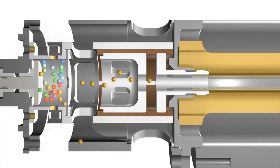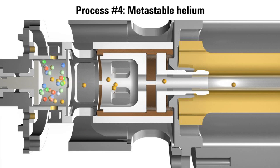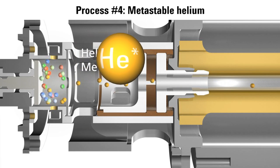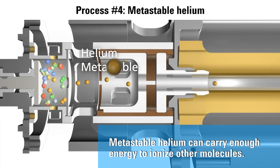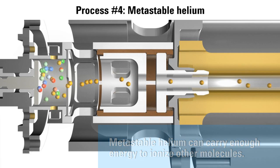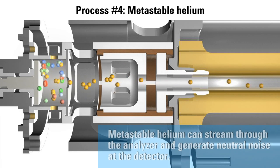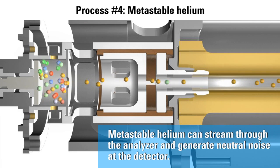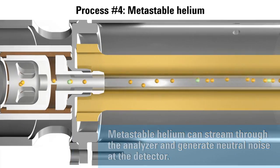Before continuing to the collision cell, one more process must be mentioned. An EI source produces a large number of highly energetic metastable helium atoms. These highly energetic atoms follow a random path like any other neutral until removed by the pump. Some will follow a path parallel to the analyzer and have a high probability of traversing the entire analyzer assembly to the HED-EM detector.